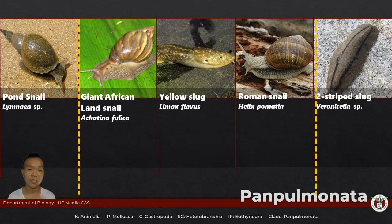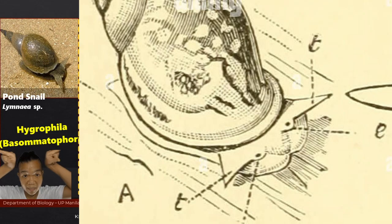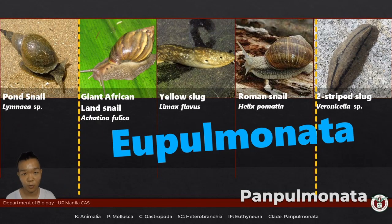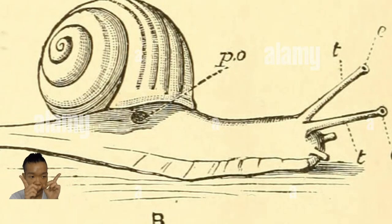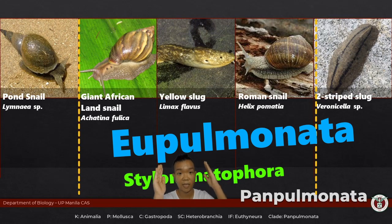Pan-pulmonata — terrestrial snails and some freshwater snails as well. Hygrophila is the former Basommatophora — 'baso' has something to do with the eyes at the base of the head tentacles, and 'fora' means bearing. The members there would be your pond snails, like Limnea. Super order Eupulmonata — the true air breathers. Stylommatophora — 'omato' means eyes, 'fora' means bearing, and the 'style' part tells you they're at the tip, meaning the eyes are at the tip of the tentacles. For your lab representatives, you have three families: Achatinidae, Limacidae, and Helicidae.